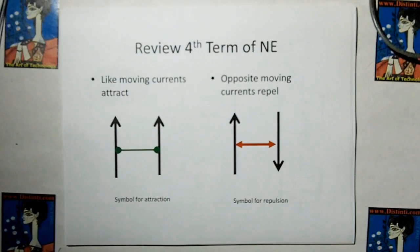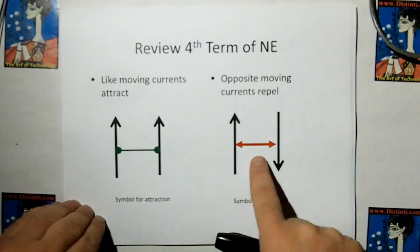From the previous video, we're going to review the fourth term of new electromagnetism. Like moving currents attract, opposite moving currents repel. That's a symbol for attraction. That's a symbol for repulsion.